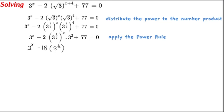Bringing 3 to the power of 2 out to the front, we get 2 by 9, which is negative 18. This gives us negative 18 multiplied by 3 to the power of x over 2, plus 77, is equal to 0. The x can be multiplied in again, and we get 3 to the power of x, minus 18 by 3 to the power of x over 2, by applying the power rule once again.